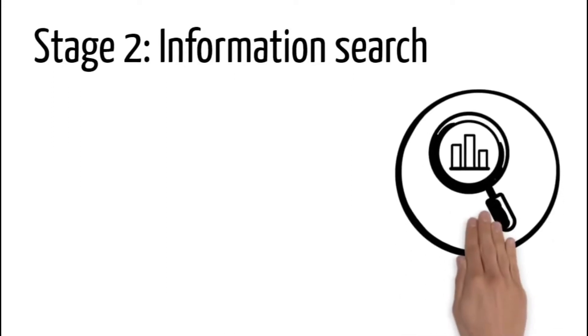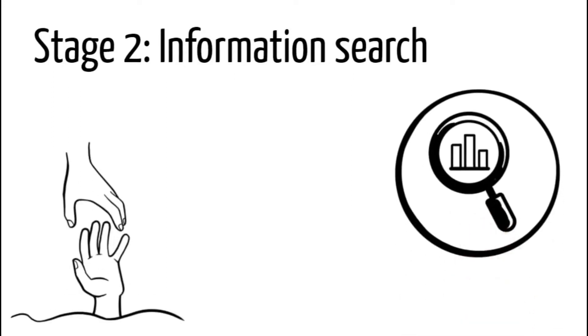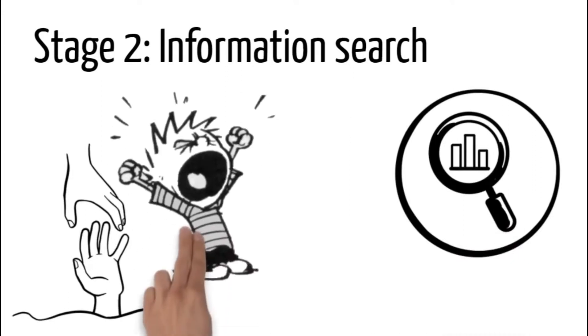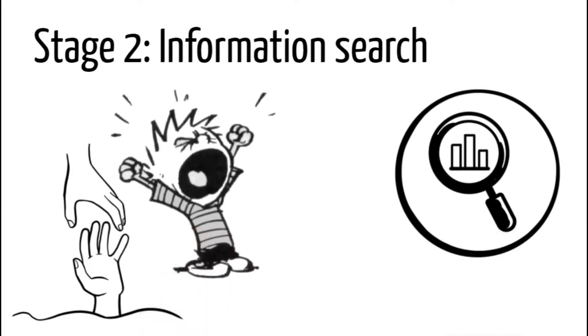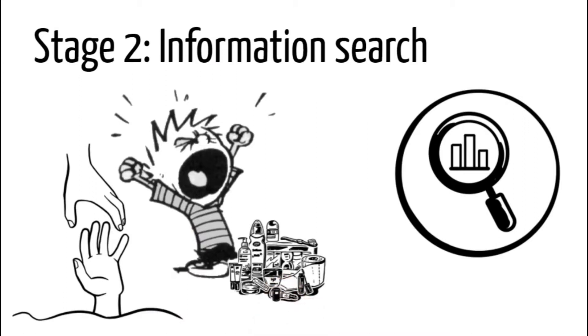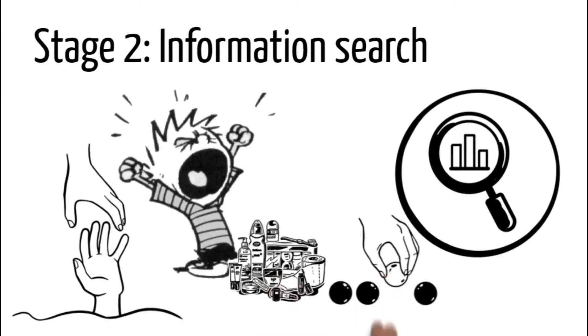Stage 2: Information Search. Now that the need has been recognized, the consumer seeks information to help fulfill that need. This stage has the highest potential of frustrating and overwhelming potential customers, if they can't find the right product or solution, or feel unable to make a choice.